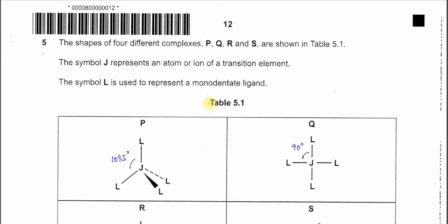Question 5. The shapes of four different complexes P, Q, R, S are shown in table 5.1. The symbol J represents an atom or ion for the transition elements. The symbol L is used to represent the monodentate ligand.